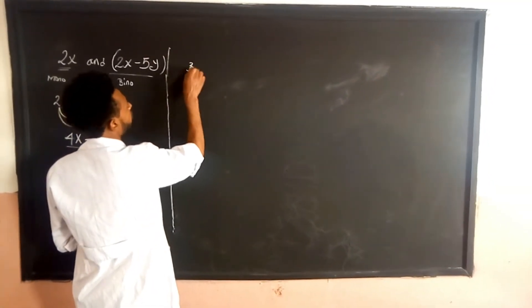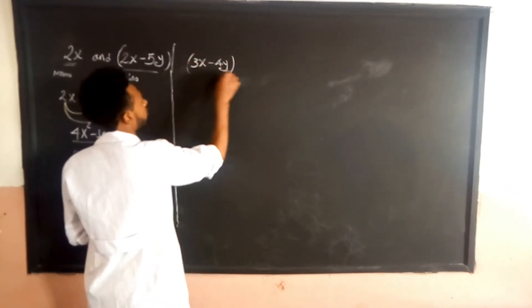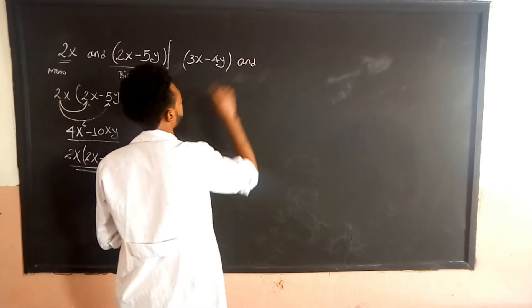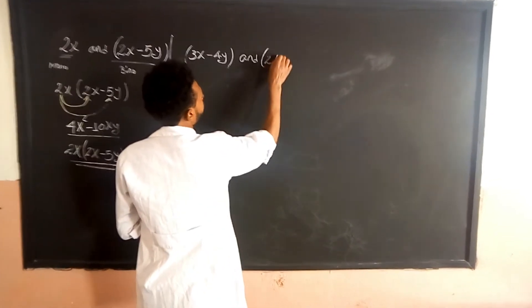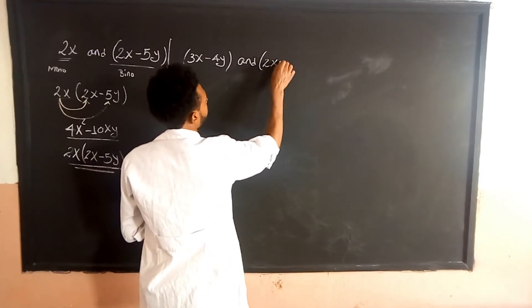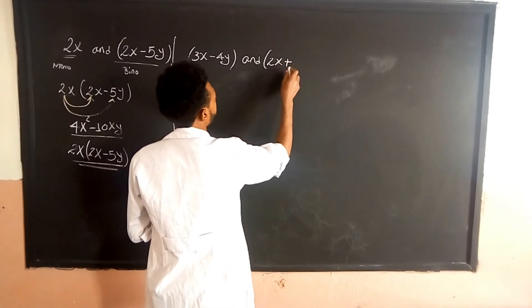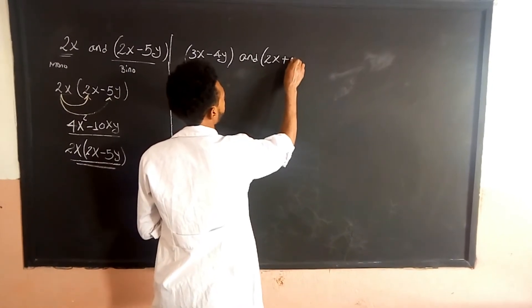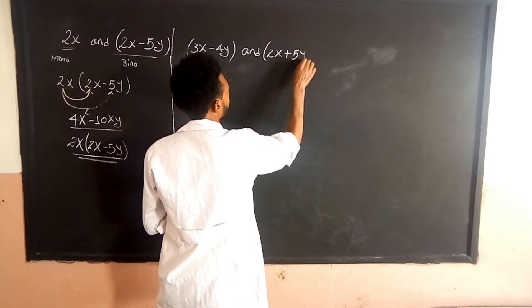Now consider the expression 3x minus 4y, and 5y, and 2x minus 5y. Working with the y terms: 5y, 4y, y.